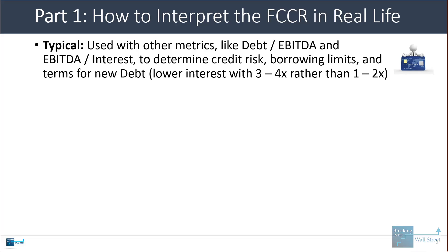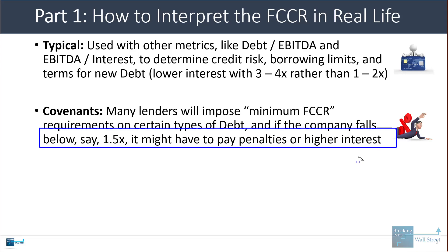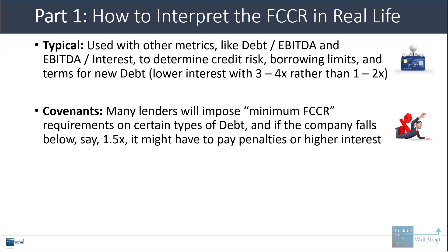In real life, you normally use the fixed charge coverage ratio with other metrics like debt to EBITDA and EBITDA interest to determine a company's credit risk, borrowing limits, and the terms for its new debt. For example, a company with a 3 to 4x coverage ratio will probably pay less interest and have more favorable repayment terms than a company with 1 to 2x coverage. Sometimes the FCCR is part of loan covenants, and lenders may require a certain minimum level. If a company falls below that minimum, it might have to pay penalty fees or higher interest rates.